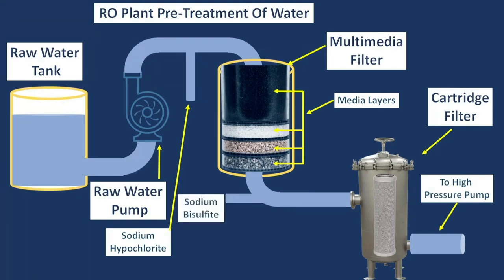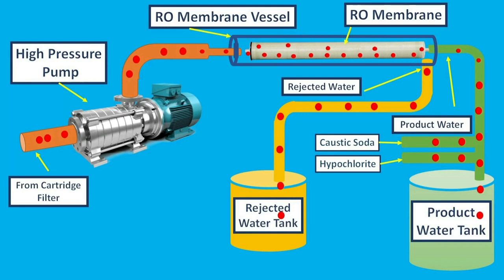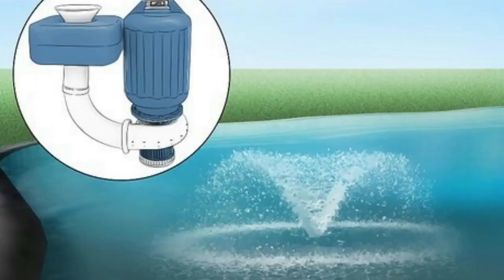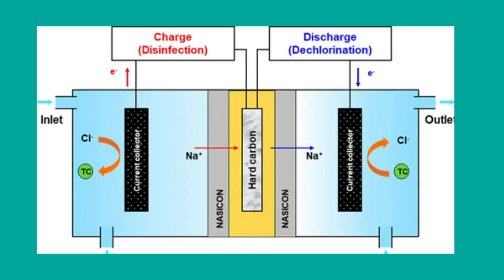Number 2 is Sodium Bisulfite or Sodium Metabisulfite. Sodium hypochlorite is harmful to RO membranes, so before the water enters the membranes, sodium hypochlorite must be removed. Sodium bisulfite is used to remove it from the water. This process is also called dechlorination.